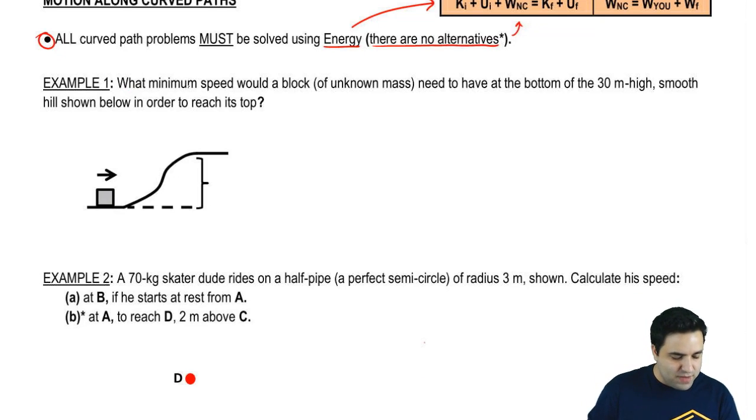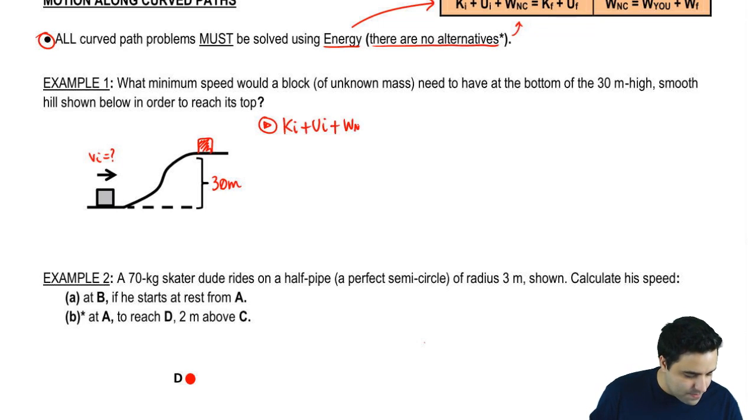First example here, what minimum speed would a block of unknown mass need to have at the bottom of a 30 meter high smooth hill in order to reach the top? So what initial velocity do you need here so that you reach the top? And this is a 30 meter hill. Now, I'm going to use the energy equation and write it here, and then we'll talk about some of the details of this question. Curved path, so I jumped straight into the energy equation.